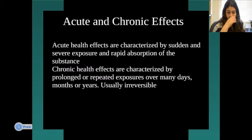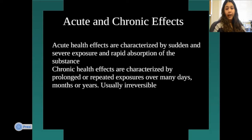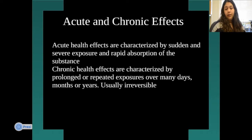There are also acute and chronic effects — two types of health effects put into consideration. Acute health effects are characterized by sudden and severe exposure and rapid absorption of the substance, meaning they can occur and go away suddenly. Chronic health effects are characterized by prolonged or repeated exposures over many days, months, or years, and are usually irreversible since you've been exposed for longer.